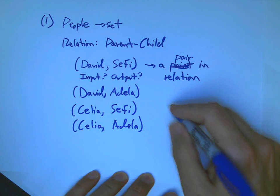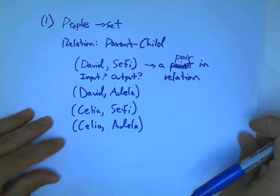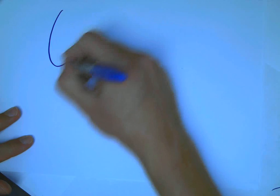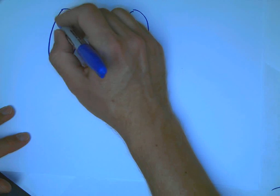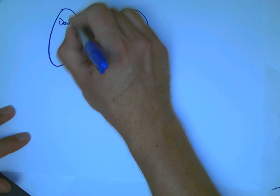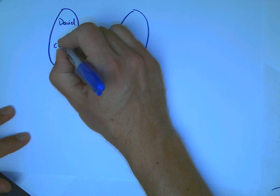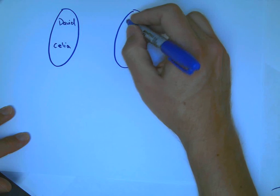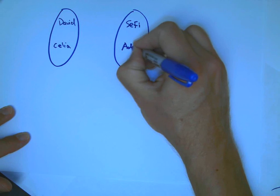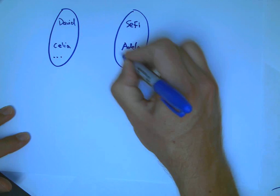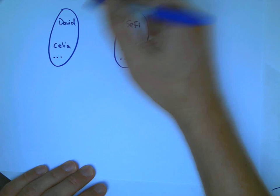You could actually make a graph of that, I suppose. Actually, no, let me do it in the arrow notation. I haven't really given an example in that. So, this is how that arrow notation would work here. Here's David and Celia. Here's Sephie and Adela. And all the other people, who don't really matter.